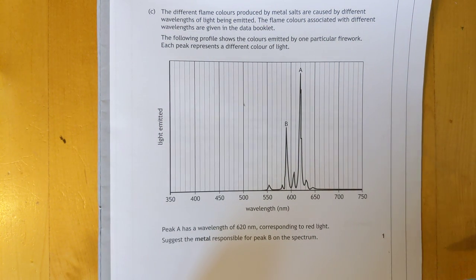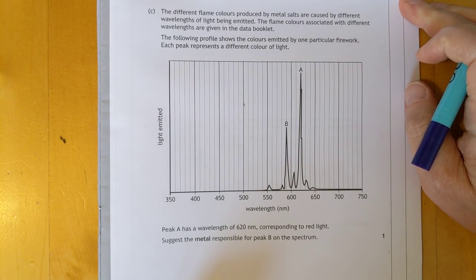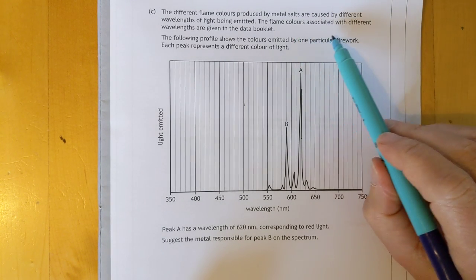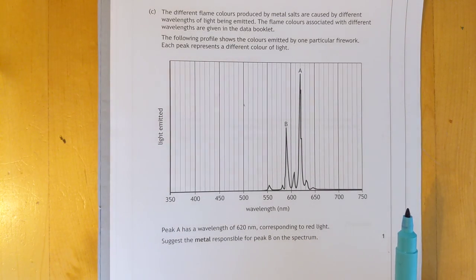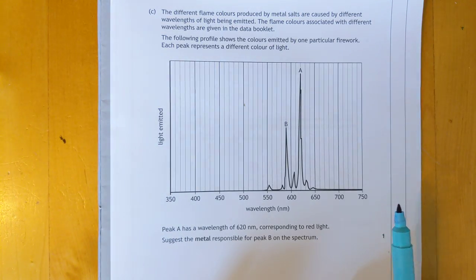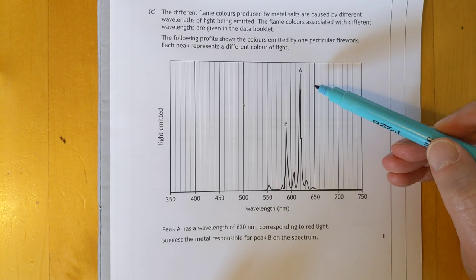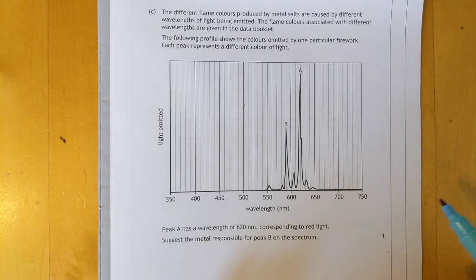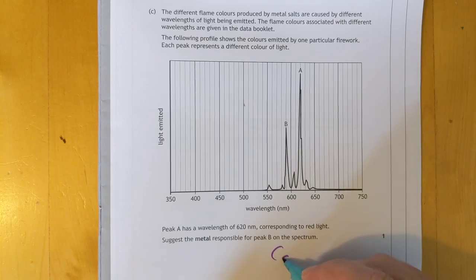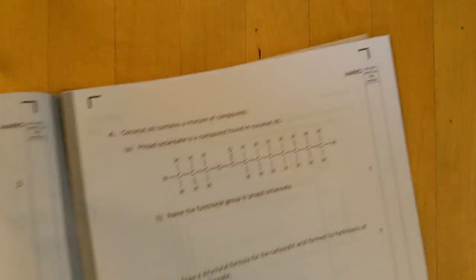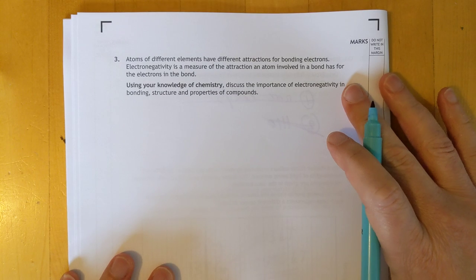What's going on here? This must be a problem solving one. Flame colours associated with the different wavelengths are given in the data booklet. That will be essential for us to work out which metal has which colour. One particular firework. Each peak represents a different colour of light. There's your wavelength. Peak A is a wavelength of 620 nanometres. 620 in your data book corresponds to calcium. That's easy.